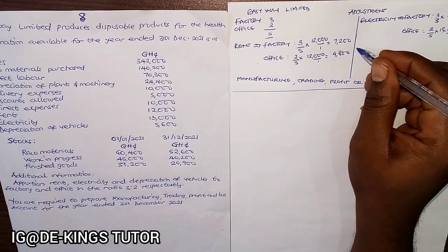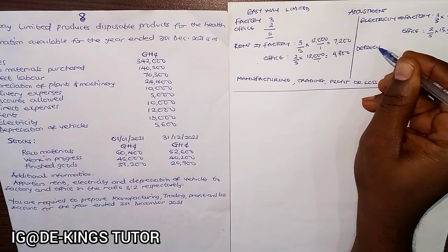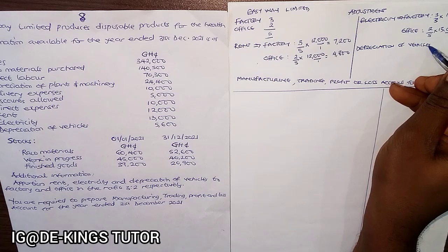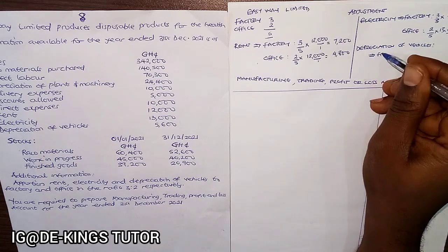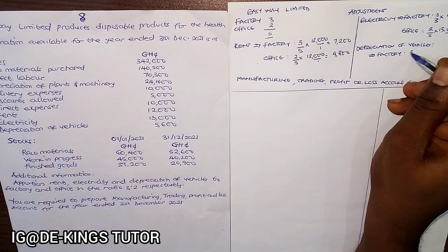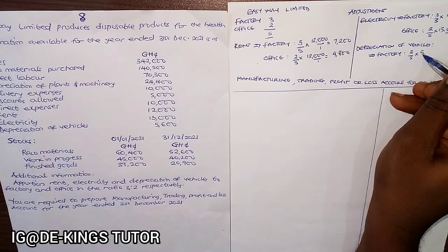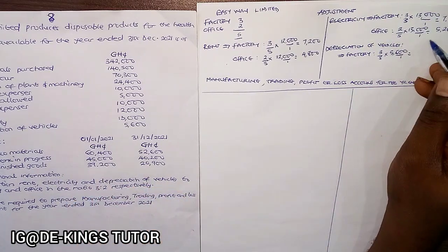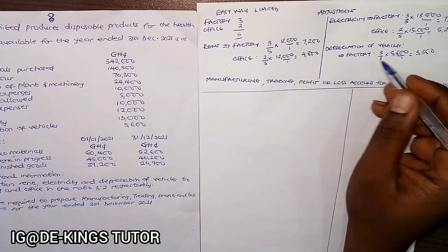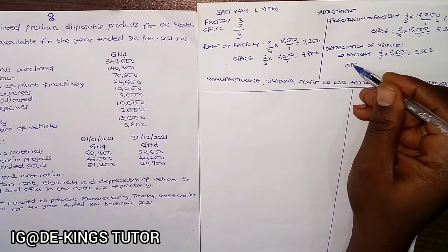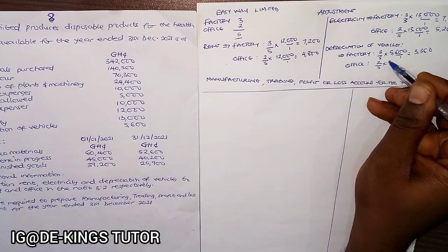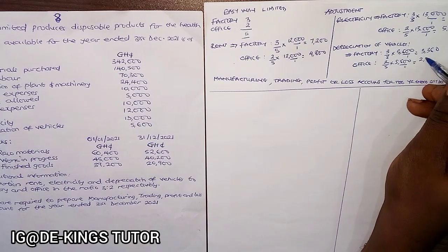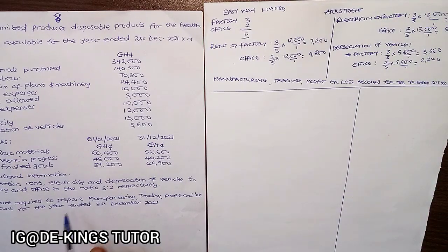The last part is depreciation of vehicles — the total is 5,600. Factory portion: 3/5 × 5,600 = 3,360. Office portion: 2/5 × 5,600 = 2,240. This is the only adjustment that was given.